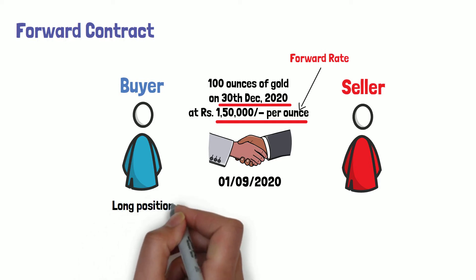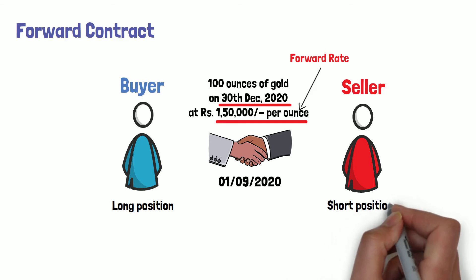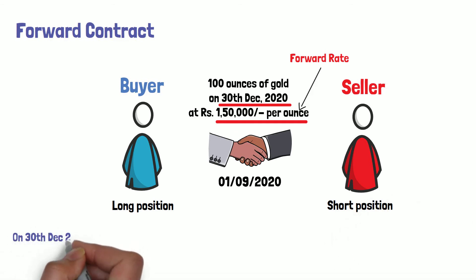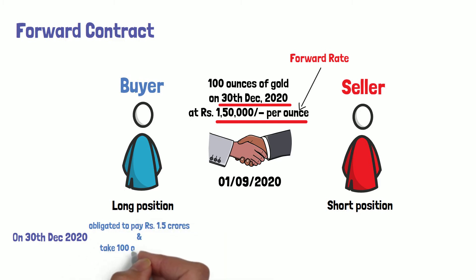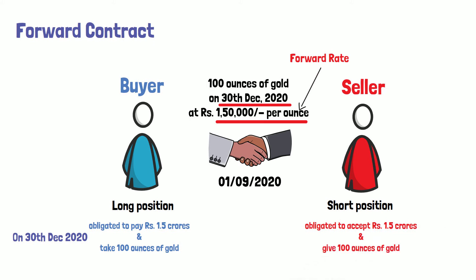In this agreement, the buyer is said to be long and the seller is said to be short. On expiry of the forward contract — that is on 30th December 2020 — the buyer is obligated to pay 1.5 crores and take delivery of 100 ounces of gold. Similarly, the seller is obligated to accept 1.5 crores and deliver 100 ounces of gold to the buyer.